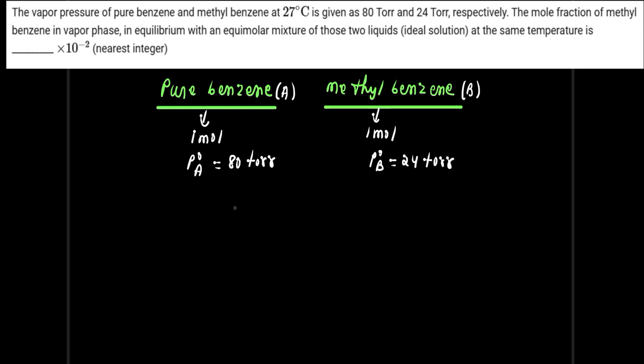So, with the moles available, we can find the mole fractions. The mole fraction of A will be equal to the mole fraction of B, which is 1 upon (1 plus 1). Solving this gives us 0.5 for each component in the mixture.